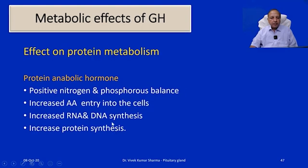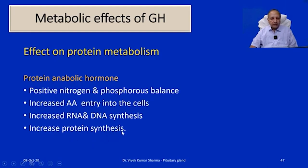Regarding intermediary metabolism, on protein metabolism, growth hormone is primarily an anabolic hormone. It causes an increase in positive nitrogen balance and positive phosphorus balance, increases amino acid entry into cells, increases protein synthesis in cells, and thereby causes an increase in muscle activity.